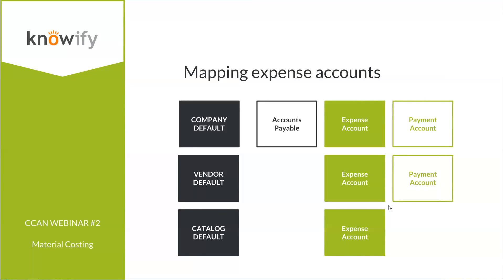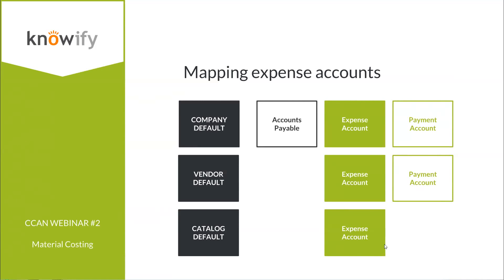You can also set per-product expense accounts in your catalog that prioritize over the vendor default. NOAAFI checks first whether it's a catalog item and uses that expense account; if not, it checks the vendor default; if none is set, it falls back to the company default. This funnel of more detail ensures everything syncs to the correct place automatically.